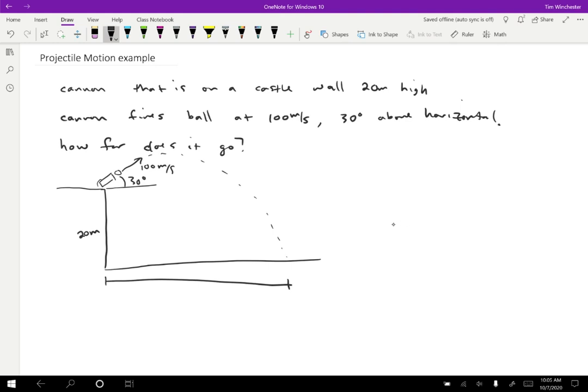So to do that, I'm going to draw a triangle. So along the hypotenuse of this triangle, we have the initial velocity, which is 100 meters per second. But we can split that into an X part and a Y part. So we know this angle is 30 degrees. And so this side along the bottom is going to be 100 meters per second times cosine of 30 degrees.